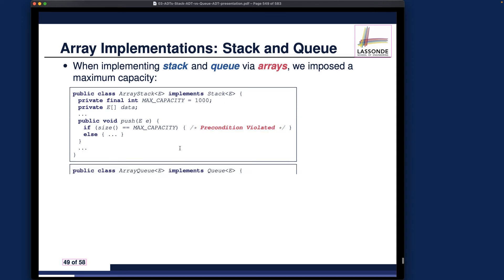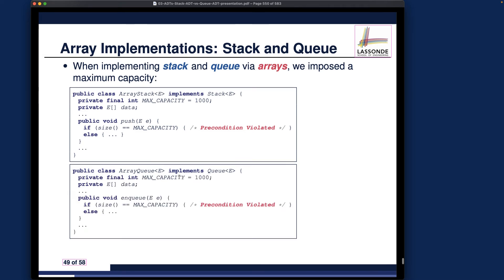And similarly, we also have the same maximum constraint on the queue ADT implementation using the conventional fixed-size array. You can see once we reach the maximum capacity for the queue, we simply throw some exception to signal precondition violation.